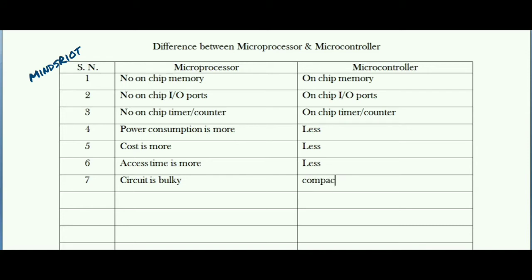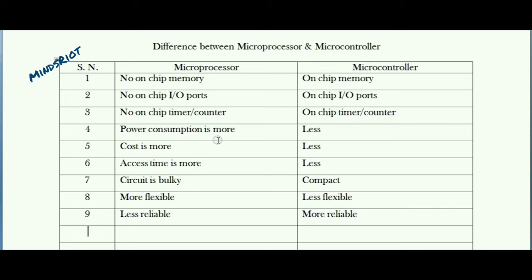Now, how do externally connected components or peripherals affect flexibility? As these components are connected externally you have the choice to choose them, hence the microprocessor system is more flexible, whereas in case of microcontroller the system is less flexible. In terms of reliability, there are a number of interconnections to different components externally, hence the microprocessor system is less reliable, whereas fewer interconnections lead to more reliability in case of microcontroller.